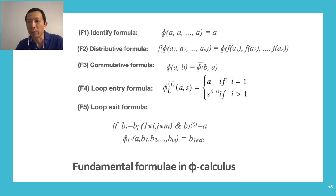Here are the five fundamental formulae in phi calculus. F2, for instance, says that if an arbitrary function applies to a phi function, we can distribute the function to each of the arguments of the phi function.